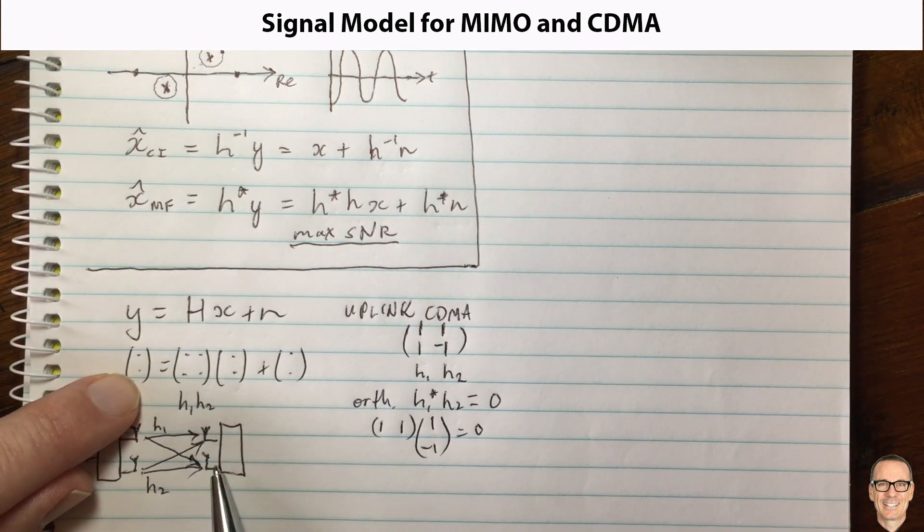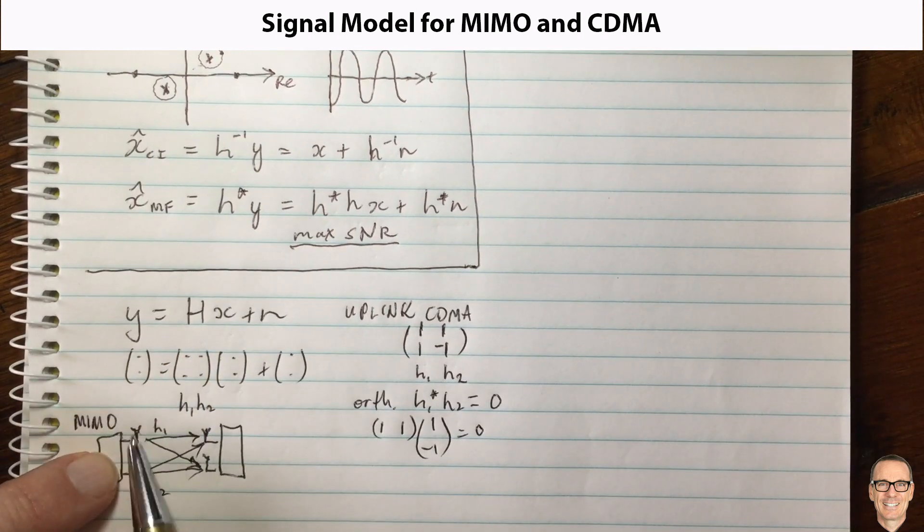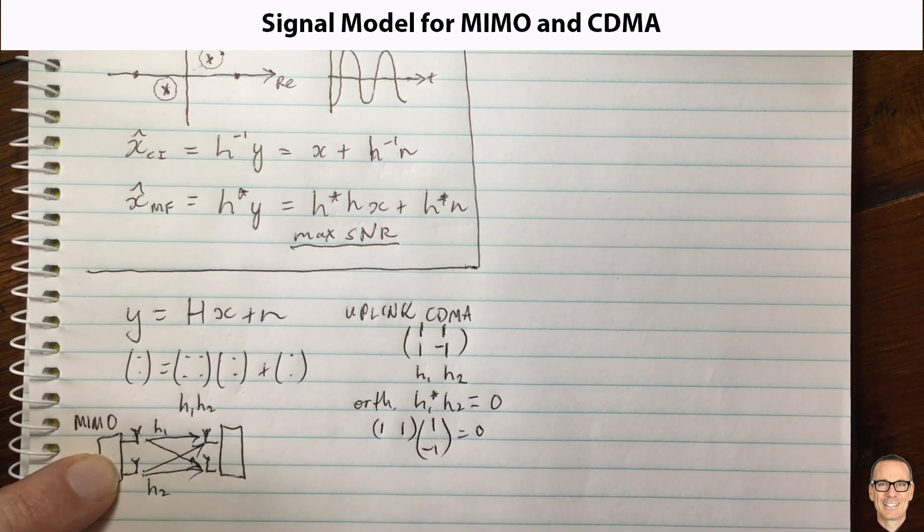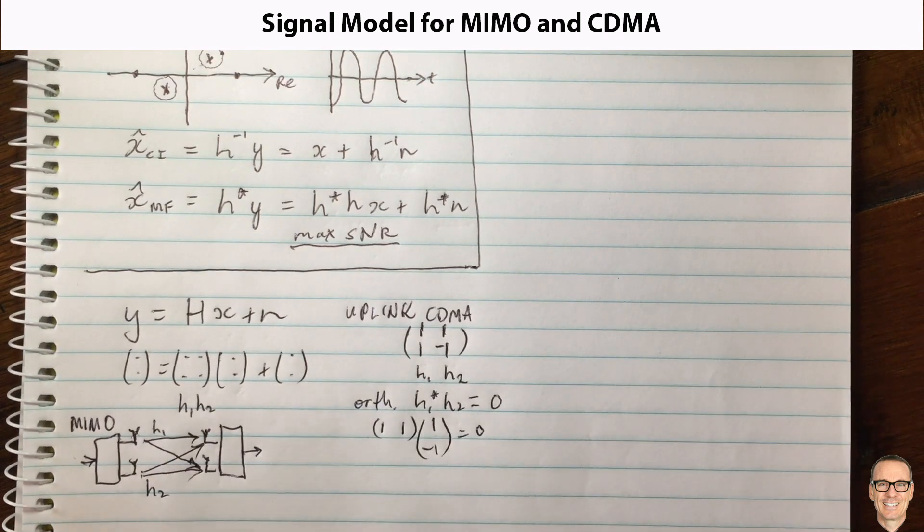And of course they're received at the same time, so this is your vector y. Your vector y is that element plus that element in the top, in the first value in y, and this in the second. And it's going to be receiving components from each of these two spatially multiplexed streams, and that's the matrix H. So this is for a MIMO example.